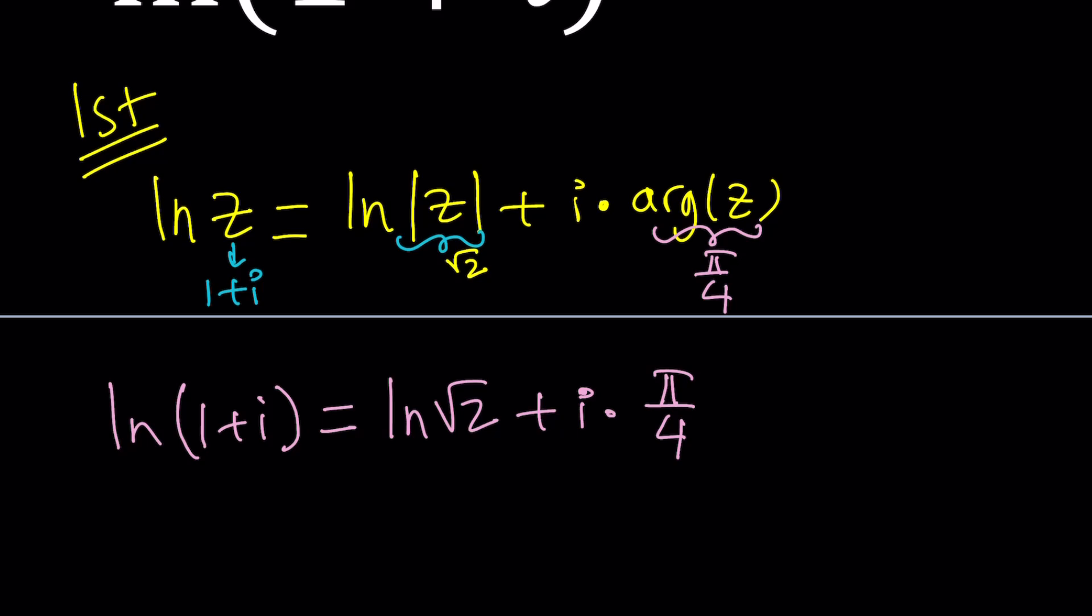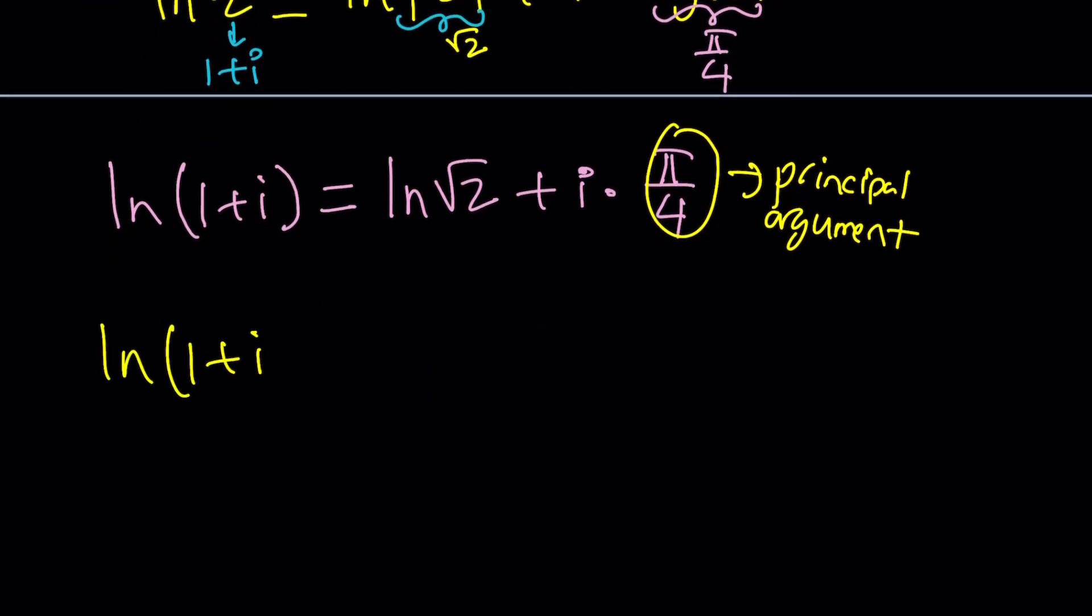So, I forgot to say one thing, though. In this case, pi over 4 is the principal argument, right? This is the principal argument. And I actually want to generalize this, because that's not the only argument that this number can have. In general, we have to write it as follows. So, ln 1 plus i equals ln root 2 plus i times pi over 4 plus 2 pi n. So, we need to add multiples of 2 pi because that's our period. And n is an integer. All right, that's where the z comes from, I find out, from the comments. Thank you for all the beautiful explanations.